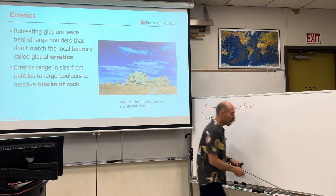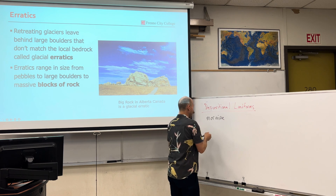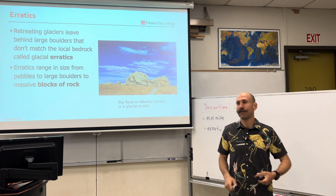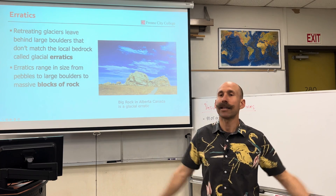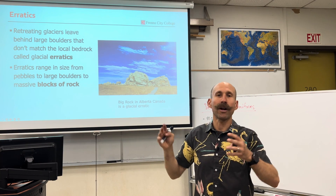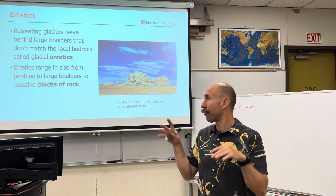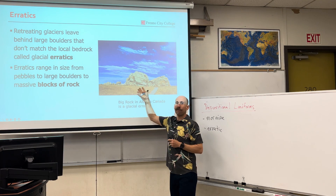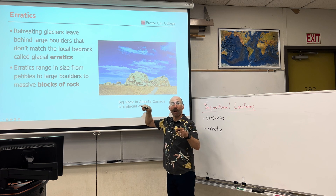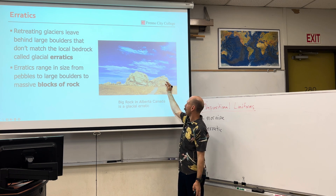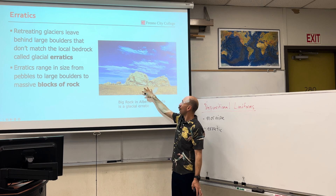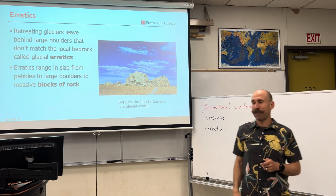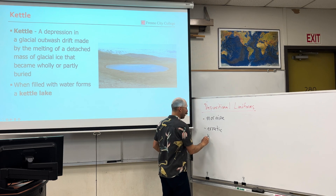Another depositional feature is erratics. Erratics are huge blocks of rock that have been transported from one location to another. Oftentimes there will be a rock somewhere that doesn't make any sense — it doesn't reflect the surrounding bedrock geology whatsoever. We can look to glacial deposition for the explanation. This is called Big Rock in Alberta, Canada — one of the biggest glacial erratics in the world — and a glacier left it right there when it melted.